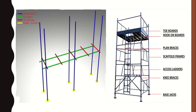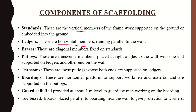Next are braces, which are the diagonal members fixed to the standards. In the diagram, the dark blue members are the standards — vertical members either resting on or embedded in the ground. The green horizontal members running parallel to the wall are the ledgers. The yellow base plate is what the standard rests on.